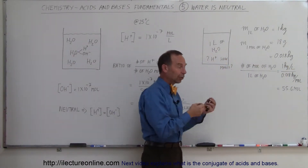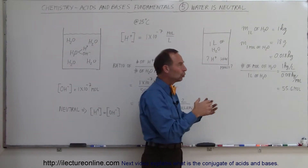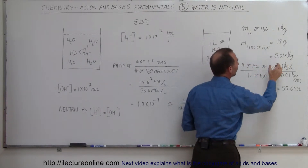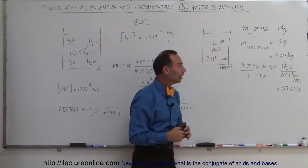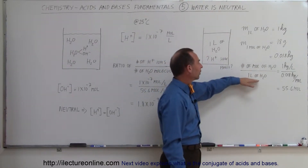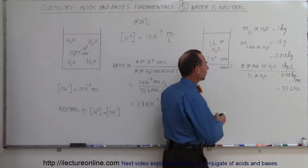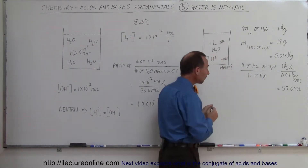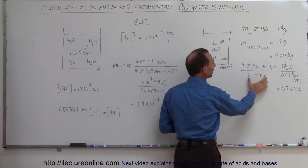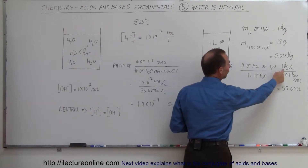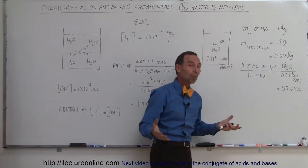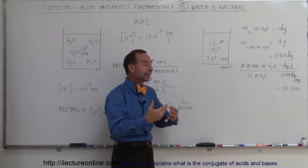That's 16 grams for the oxygen and 1 gram each for the two hydrogens, so one mole of water has a mass of 0.018 kilograms. If we take the ratio — the number of moles of water per liter of water — since we have 1 kilogram per liter and 0.018 kilograms per mole, that means there are 55.6 moles of water in one liter of water.